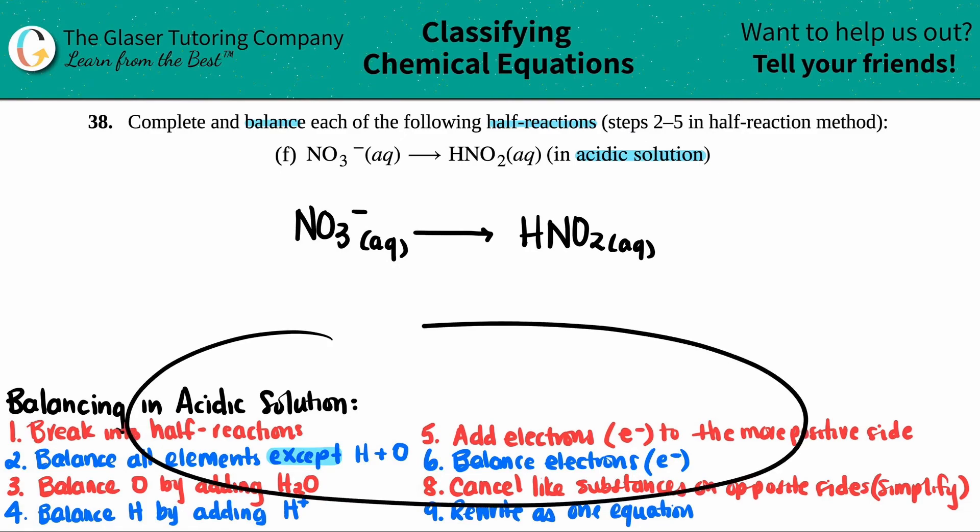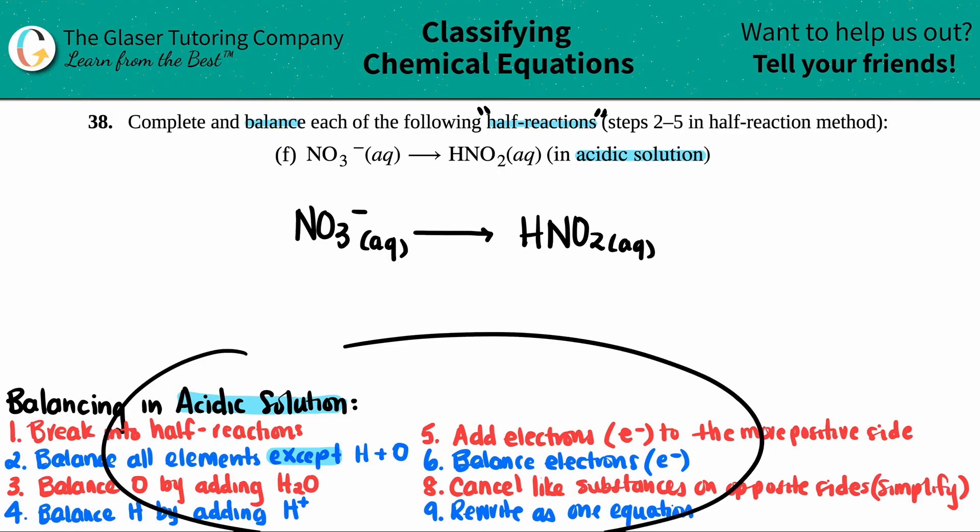So I wrote down all of the steps in which we can balance redox reactions in an acidic solution. However, since they only gave us a half reaction, we only have to do a few of these steps. I just wanted to give you all these steps just so that you guys have it, but we're only going to be doing step two through five here. The first step, if we were given a full reaction, is to break it into the half reaction. So this is done. Now let's get to it.